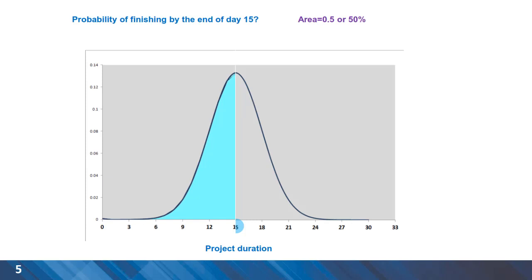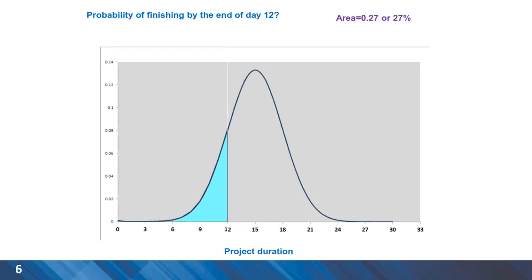For the CPM result of 15 days, we have a 50-50 chance of completing the project at this duration because of unforeseen situations that might happen. For any shorter duration such as 12 days, the probability will be less. In this case, the area under the curve is 27%, and we will talk about how this has been calculated shortly.